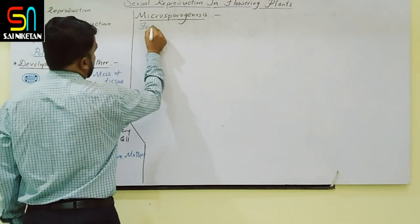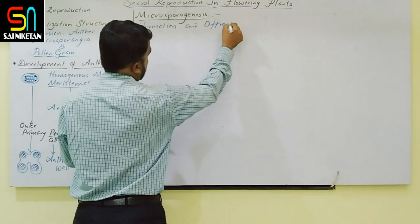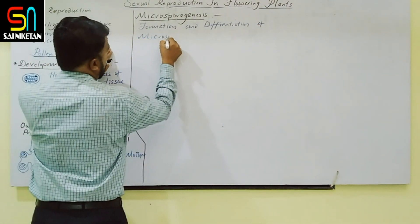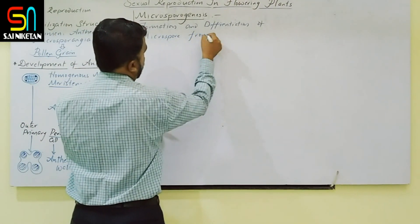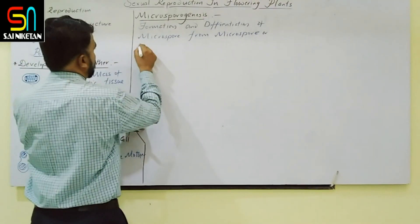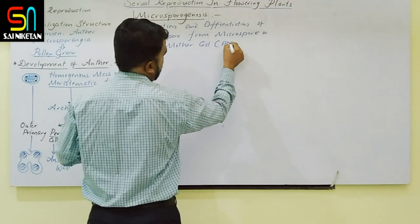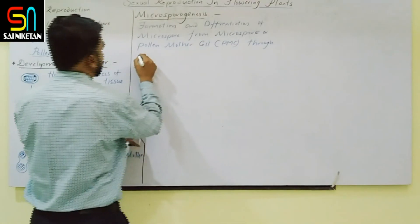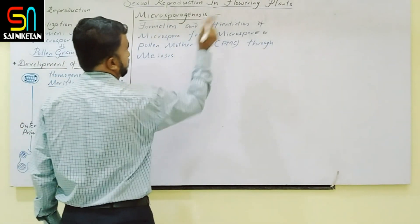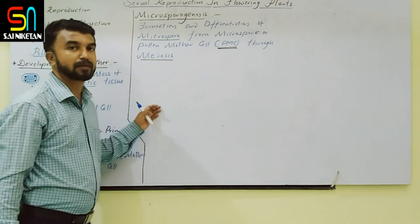The definition of microsporogenesis: it is the formation and differentiation of microspores from pollen mother cells through meiosis. This is microsporogenesis.